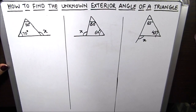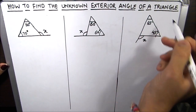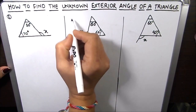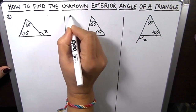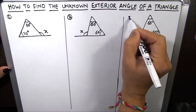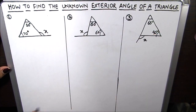Hello everyone! In this video we are going to learn how to find the unknown exterior angle of a triangle. This is going to be a very easy and short video and we are going to solve three examples. So let's get started.